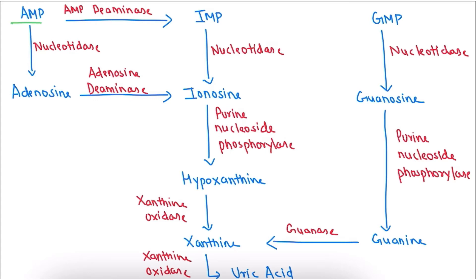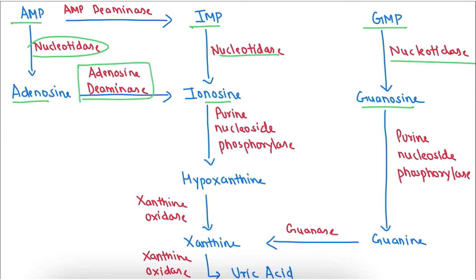As we can see, AMP, IMP, and GMP get converted into their respective nucleoside forms — adenosine, inosine, and guanosine — with the help of the enzyme nucleotidase. Adenosine then gets converted into inosine with the help of adenosine deaminase (ADA), because purine nucleoside phosphorylase is not capable of converting adenosine to hypoxanthine. Guanosine, however, is converted directly to guanine with the help of purine nucleoside phosphorylase, and inosine is also converted to hypoxanthine by the same enzyme.